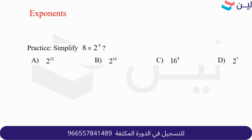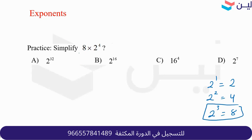To solve 8 × 2⁴, you need either the same base or the same power. I can change 8 to a power of 2: 2 to the first is 2, 2 squared is 4, 2 to the third is 8. So it becomes 2 to the third times 2 to the fourth. Same base — add the powers: 3 plus 4 equals 7. The answer is 2 to the seventh.